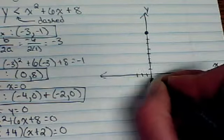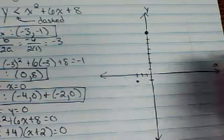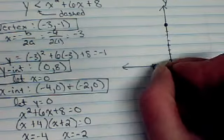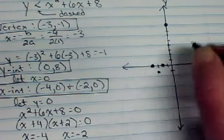I need to plot my vertex: 1, 2, 3. Negative 3, negative 1. My x-intercepts are both negative. Here's negative 4 and here's negative 2.